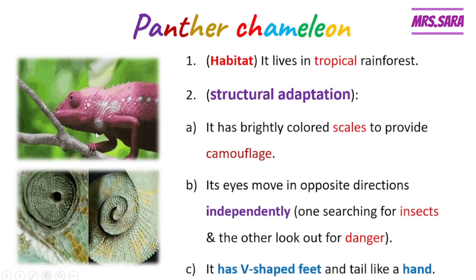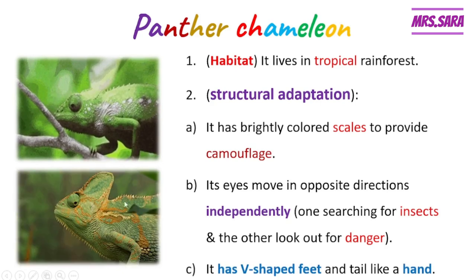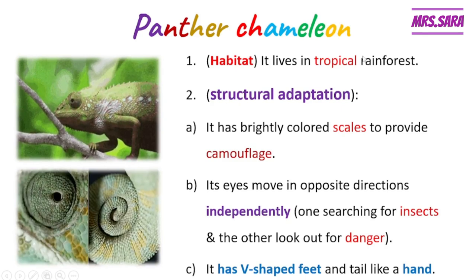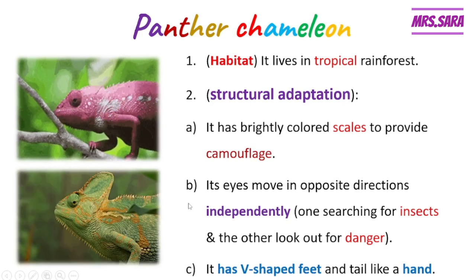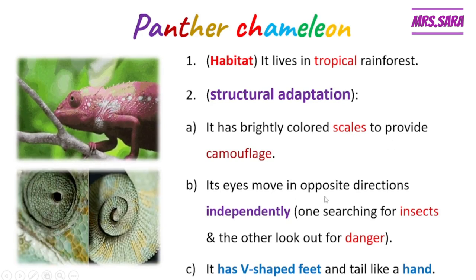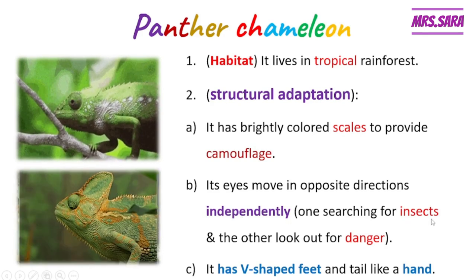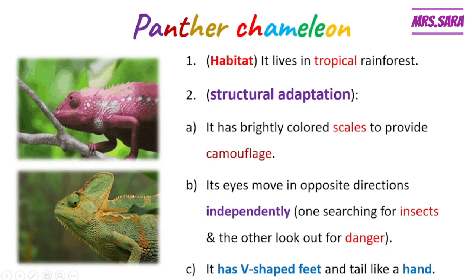Also, it has V-shaped feet and a tail-like hand. So the panther chameleon's structural adaptations include: brightly colored scales for camouflage, eyes that move independently in opposite directions, V-shaped feet, and a tail-like hand.